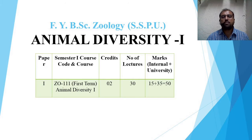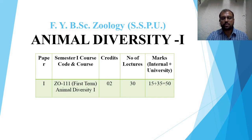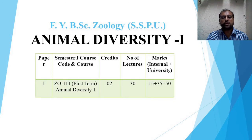This marking pattern is not only for this subject but also for all the remaining subjects and papers. You will have to score out of 40 if you opt for your first year — this is about the choice based credit system pattern. After this marking pattern we will move towards the different topics which come under animal diversity first.